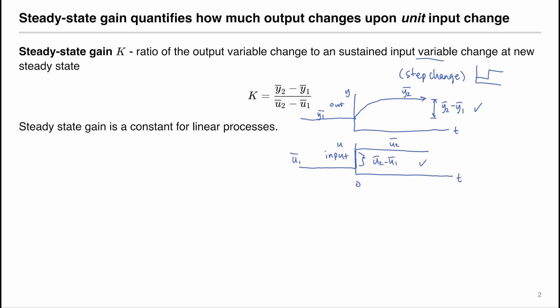So that means we can quantify how much output changes upon a unit input change. So the output change is normalized by input change, amount of input change. And the steady-state gain K is a constant for linear processes, but it may not be a constant for non-linear processes.